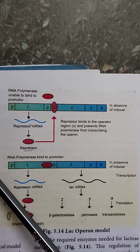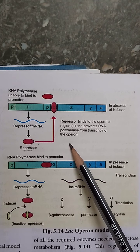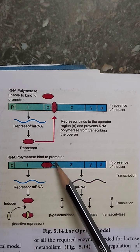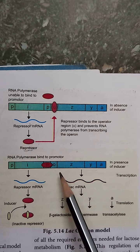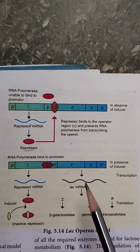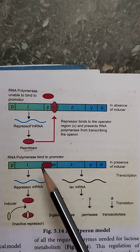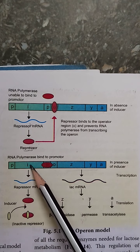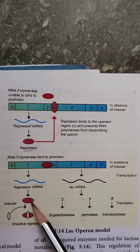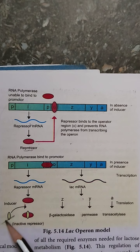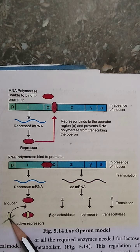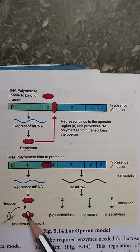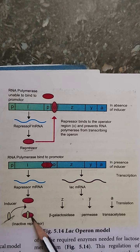Now, when the bacteria consumes lactose, the lactose must be hydrolyzed into glucose and galactose. The enzymes are needed for this. Now, lactose is acting as an inducer. Why? Because lactose goes to act with the repressor protein. When it interacts with the repressor protein, it changes its structure and makes it an inactive repressor. So it can no longer bind with the operator region.